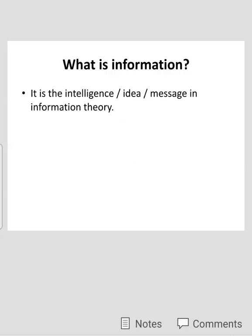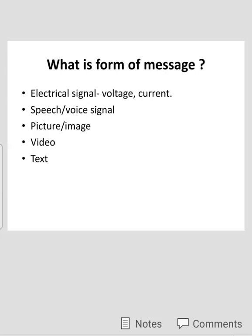Now, what is information? Information is any intelligence, any idea, or any message in information theory. The message may be in the form of electrical signal, i.e., voltage and current; speech or voice signal; picture or image; video; or any text. That is, we can transmit such types of messages from one place to another place.